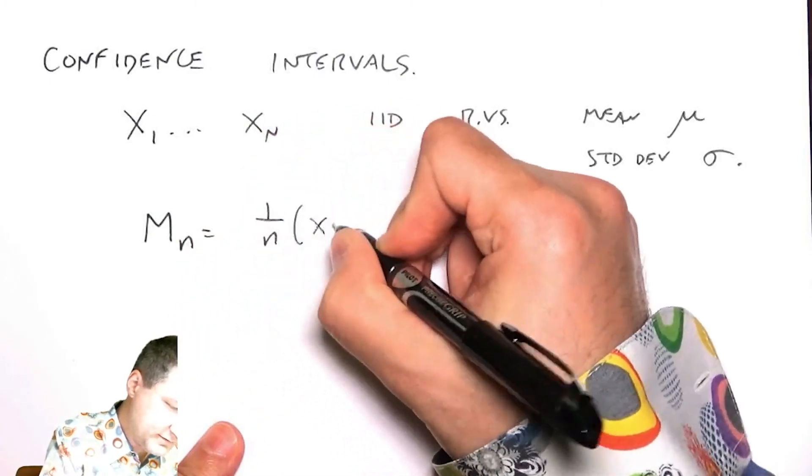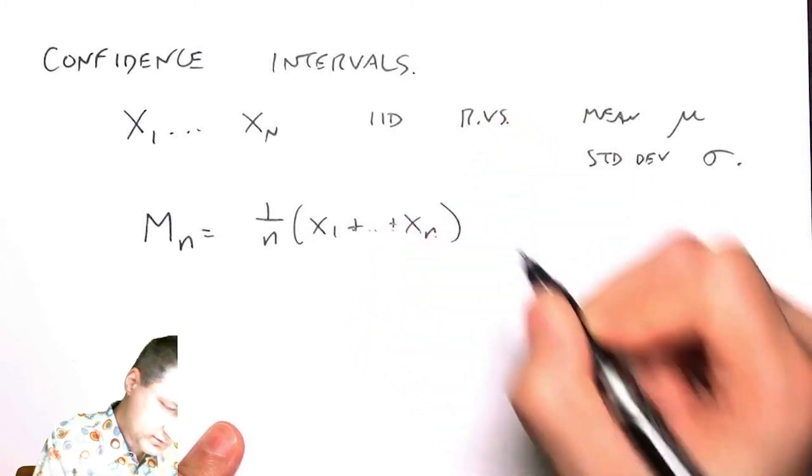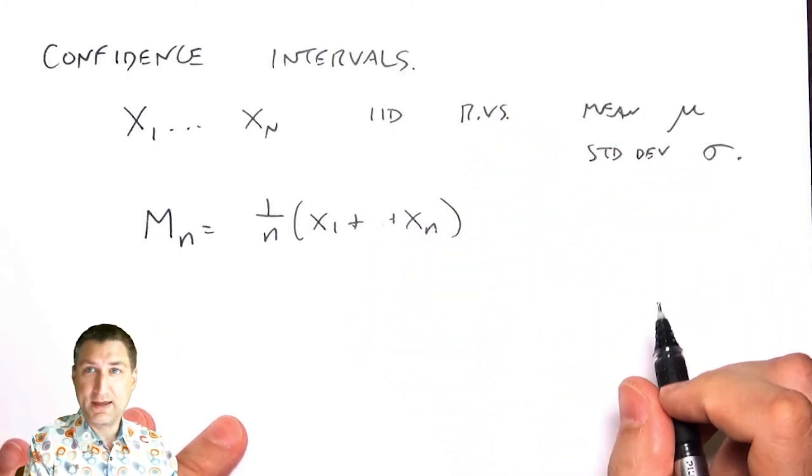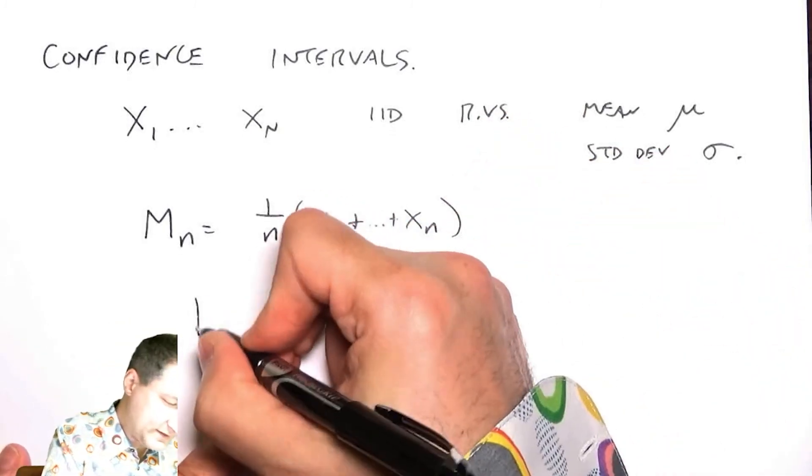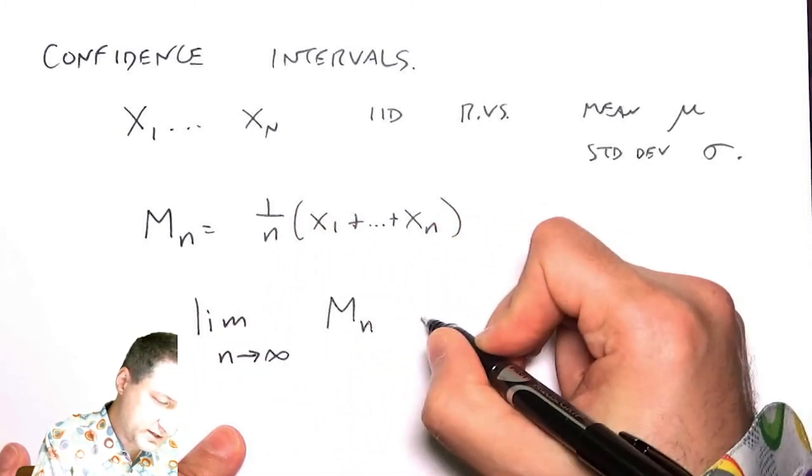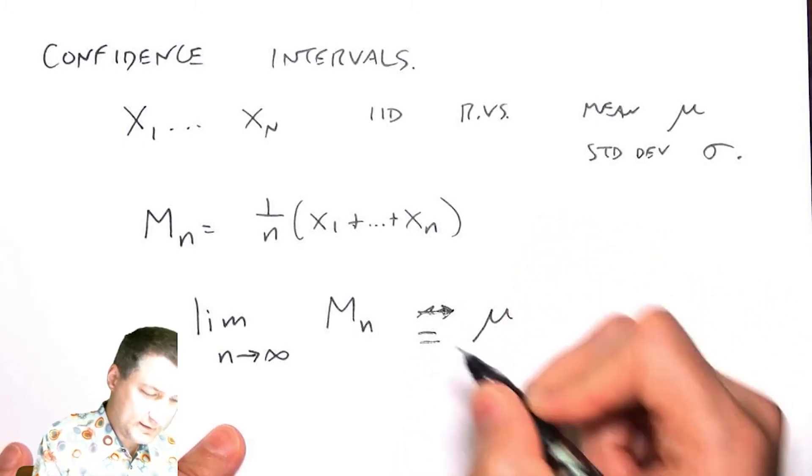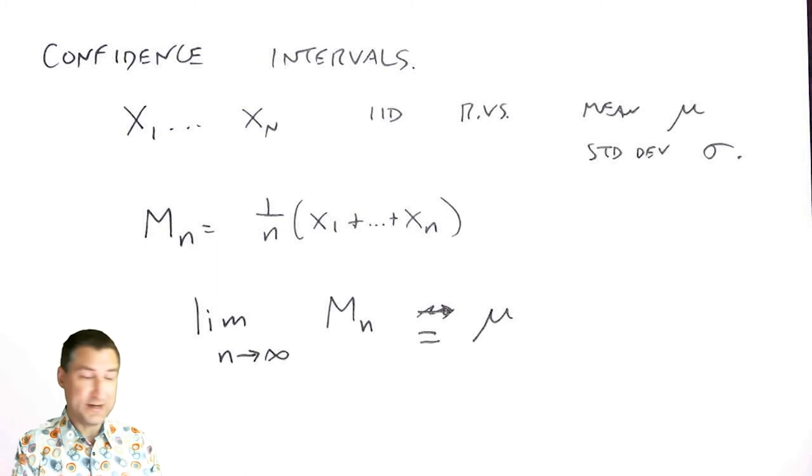The various laws of large numbers tell me that in the limit, this mean looks like μ with probability one.